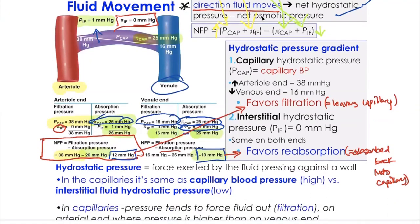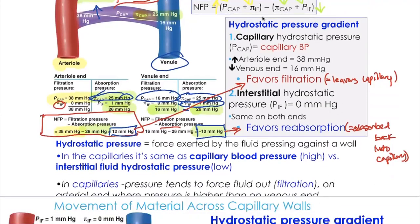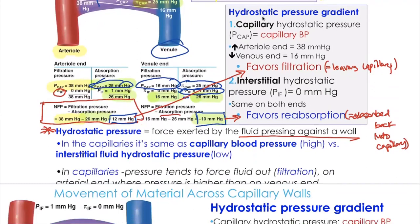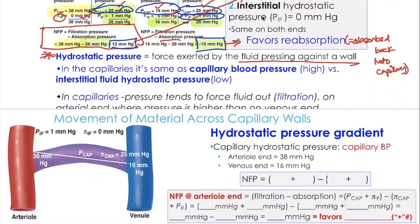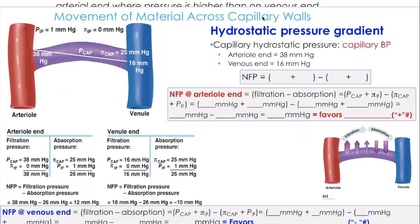Hydrostatic pressure is the force exerted by fluid pressing against the capillary walls — higher at the arterial end because fluid is being pushed out. As fluid leaves, hydrostatic pressure inside the capillary decreases. Osmotic pressure shouldn't change because plasma proteins stay inside the bloodstream, so osmotic pressure in the interstitial fluid also stays the same.